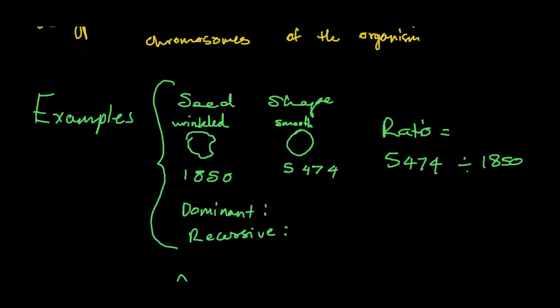Now, for our first example, we have seed shape. Just bear with my really bad drawings, but in our seed shapes, we've got either a wrinkled seed or a smooth seed. These are the numbers associated. So in this experiment that someone has conducted, they've found that there's 1,850 wrinkled seeds and there's 5,474 smooth seeds. So in this case, what do you think the dominant trait is? Is it wrinkled or smooth?